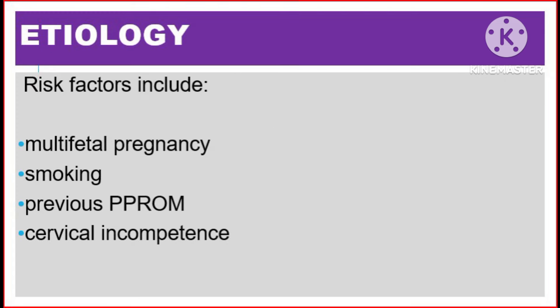Etiology. Risk factors of preterm premature rupture of membranes include multifetal pregnancy, smoking, previous preterm premature rupture of membrane, and cervical incompetence.